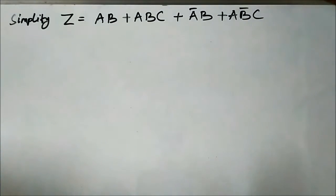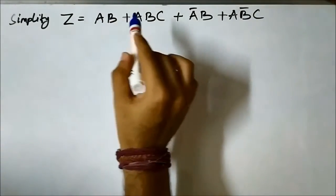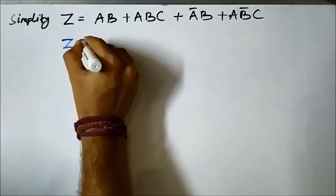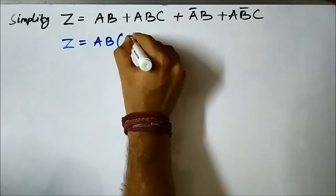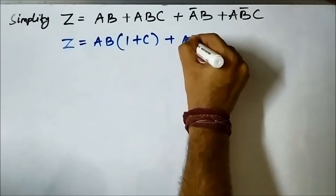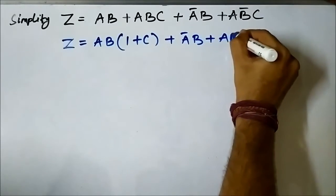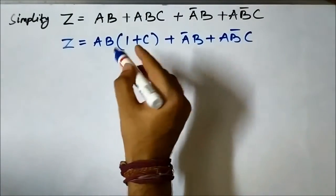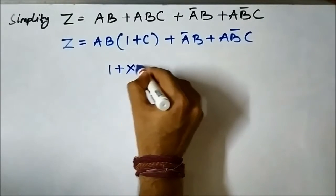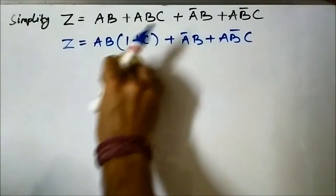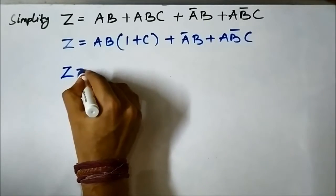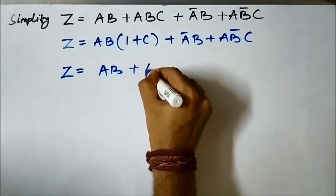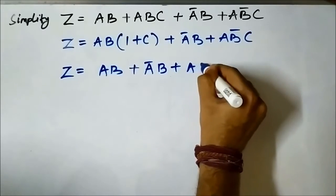In the first two terms we have ab as common — ab + abc — so we take ab as common, giving ab(1 + c). We now apply the boolean algebra rule that says one OR-ed with any boolean variable gives one, so 1 + c = 1. Therefore ab(1) = ab, and we can write z = ab + āb + ab̄c.